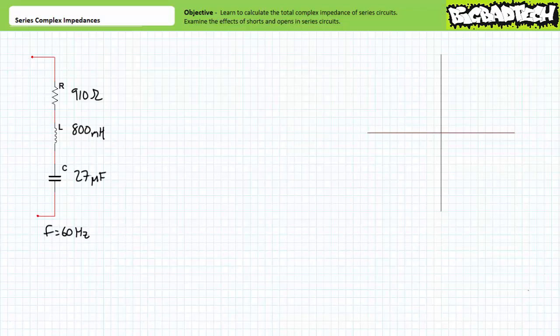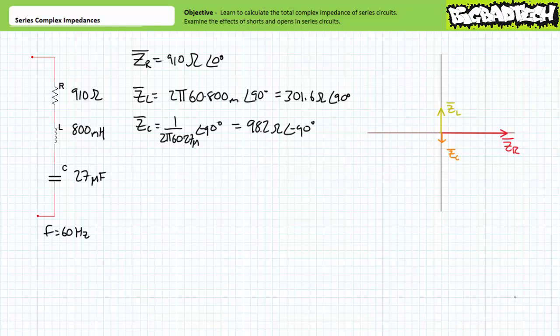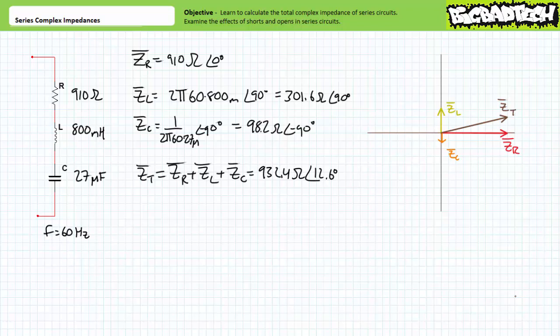A short is a path with zero impedance through which substantial current will flow — no voltage will be dropped across the short. In contrast, an open is a path with infinite impedance through which no current will flow — all voltage will be dropped across the open. Consider a series relationship of a 910 ohm resistor, an 800 millihenry inductor, and a 27 microfarad capacitor at a frequency of 60 hertz. Ordinarily, the resistor presents 910 ohms at zero degrees; the inductor roughly 301.6 ohms at positive 90 degrees; and the capacitor roughly 98.2 ohms at negative 90 degrees. This series relationship represents a total impedance of roughly 932.4 ohms at an angle of 12.6 degrees, slightly inductive in nature.